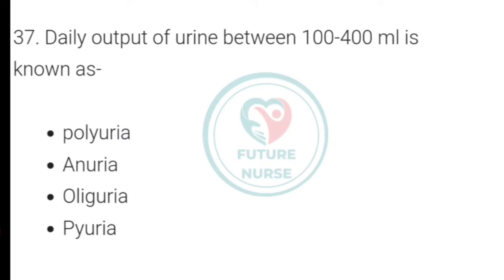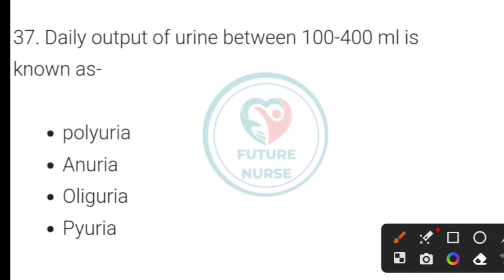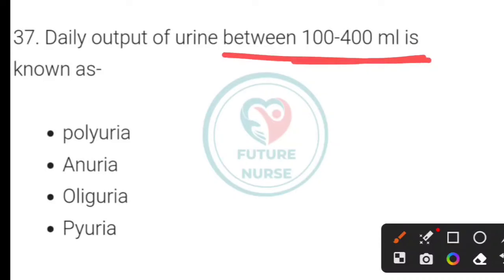Daily output of urine between 100 to 400 ml is known as what? The correct answer is oliguria.